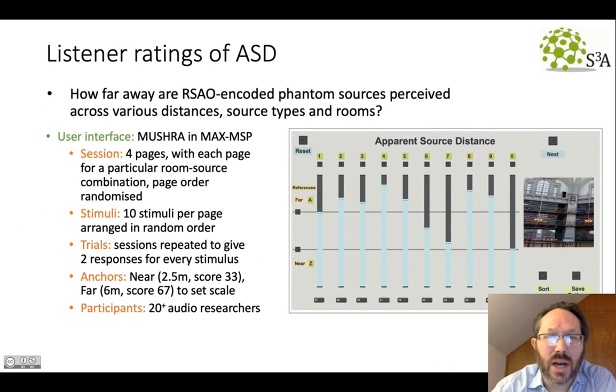So the ratings were gathered by asking participants to rate how far away a sound appeared across those different test conditions. Gathered using this MaxMSP interface on a multi-stimulus presentation on each page, which was determined for a particular room and a particular source on each page. So we had four different pages. And on each page, the distances were randomly ordered for these 10 different stimuli to be rated. And the scale was set by these anchors for near and far at the two different distances in the Pori Hall. We recruited over 20 audio researchers to participate in the experiments.